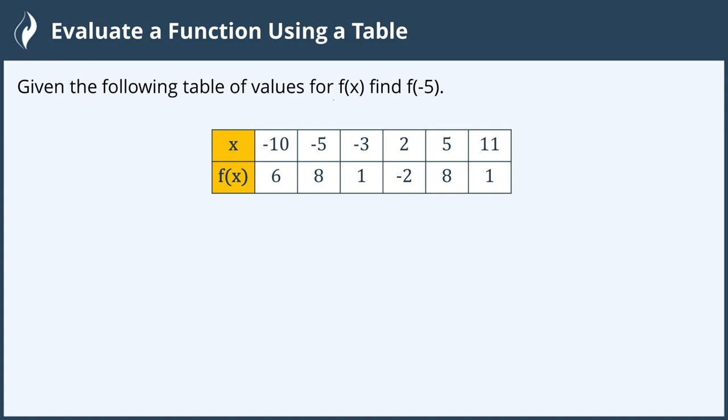The notation f of x means that we have a function and the variable or the input value is x. We are looking for the output variable where our input is negative 5.